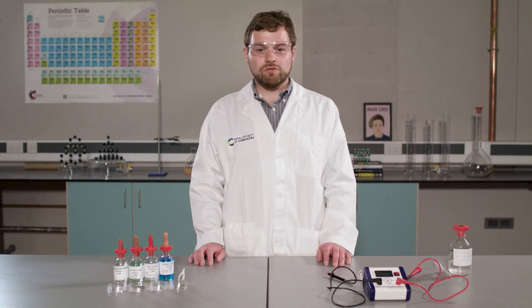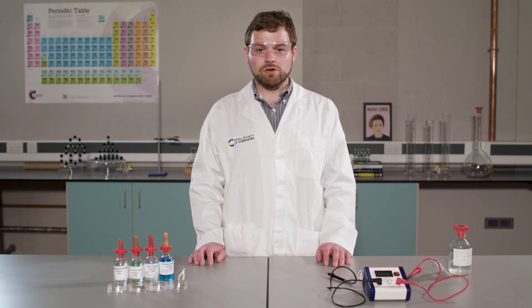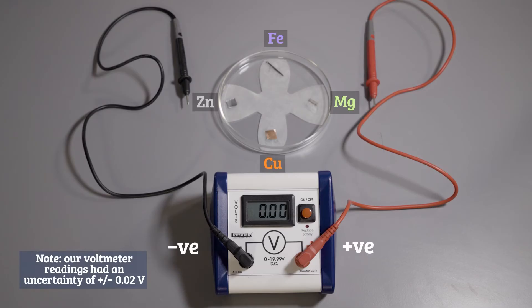Now we can start to measure the potential difference of our four different half cells using a voltmeter. If your voltmeter requires setting we need to set it to the values we are expecting to measure. In this experiment it's up to about two volts so this is the most appropriate setting. A voltmeter has a positive terminal and a negative terminal. Here the positive terminal is connected to a red lead and the negative terminal is connected to a black lead.